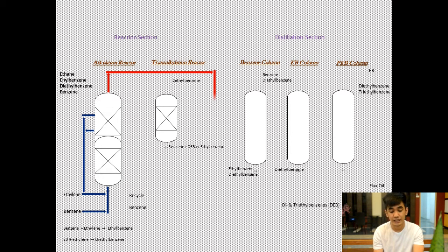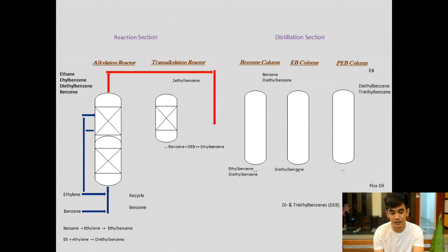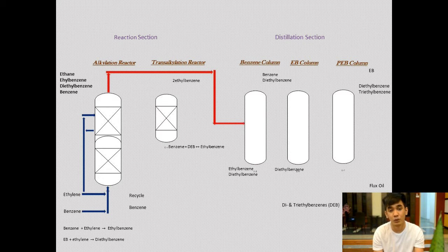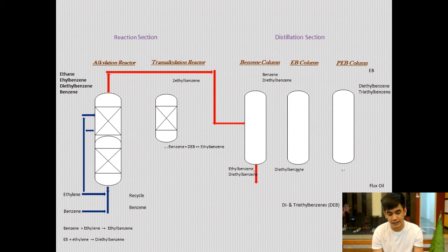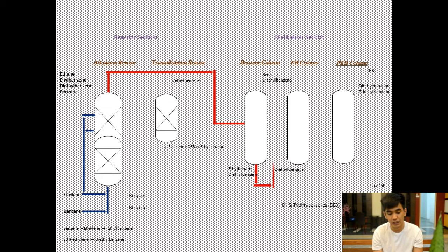In the alkylation reactor, ethylene reacts completely, leaving only the inert constituents of the feed such as ethane. These inerts pass through the reactor and are removed from the plant at a convenient point. The top product of the alkylation reactor consists of ethane, ethyl benzene, diethyl benzene, and benzene, which is then fed to the benzene column in order to separate benzene from the mixture.